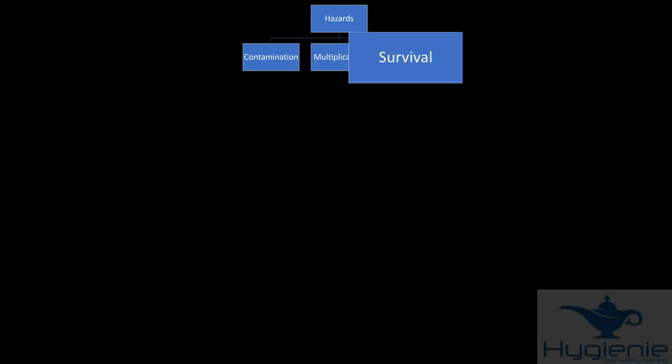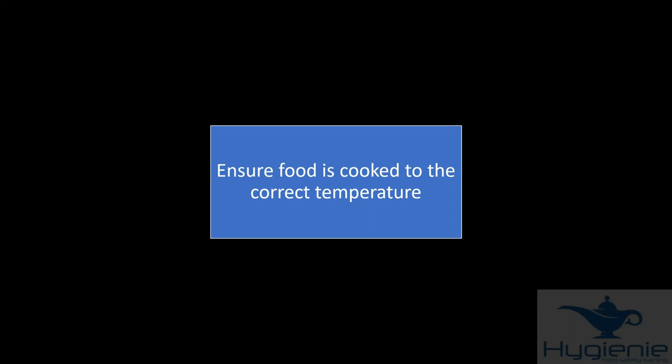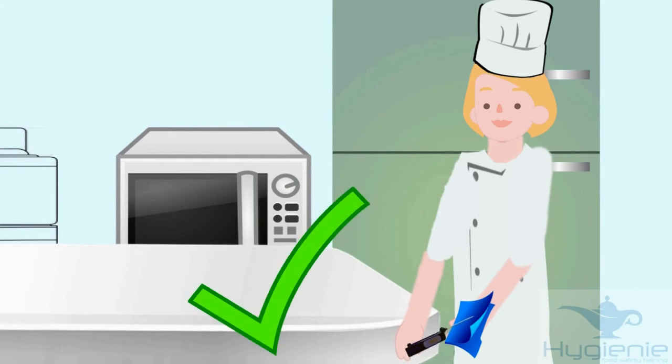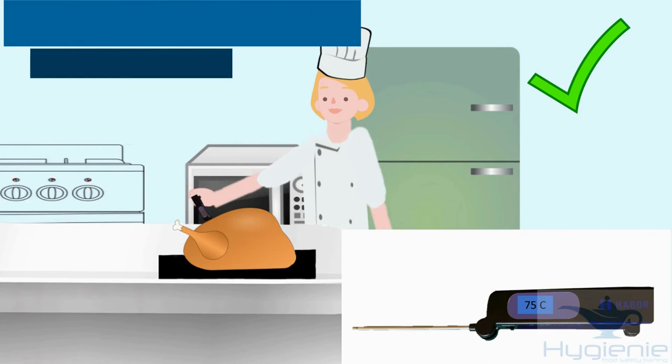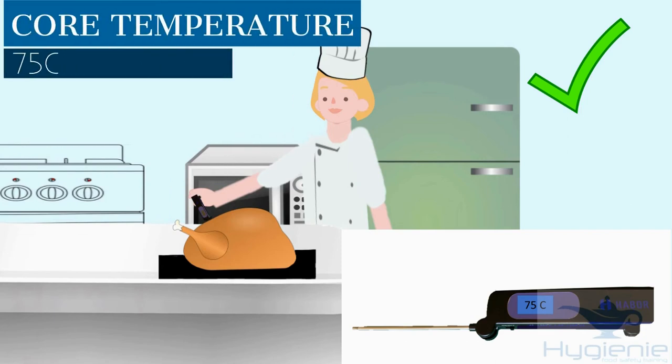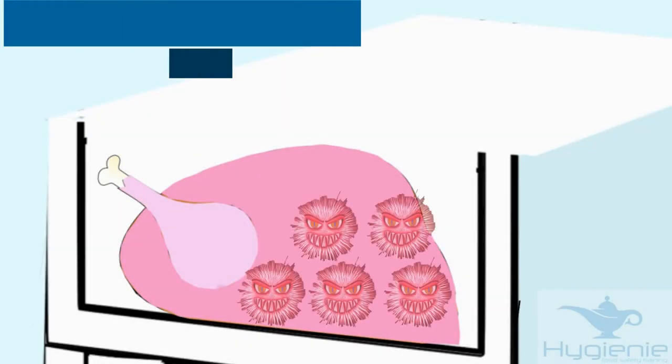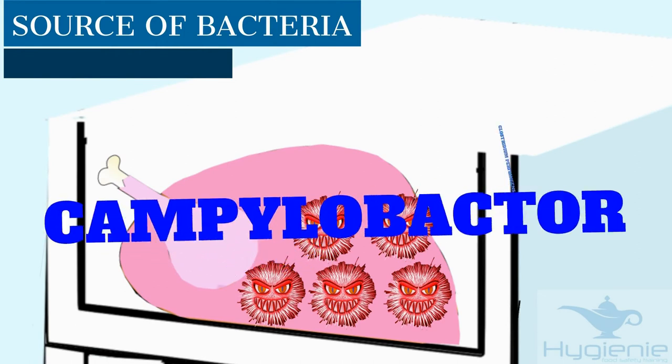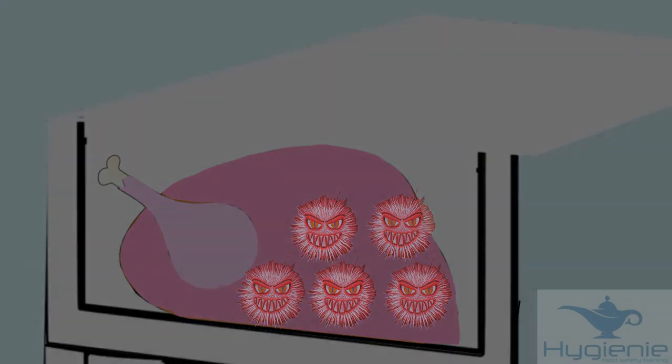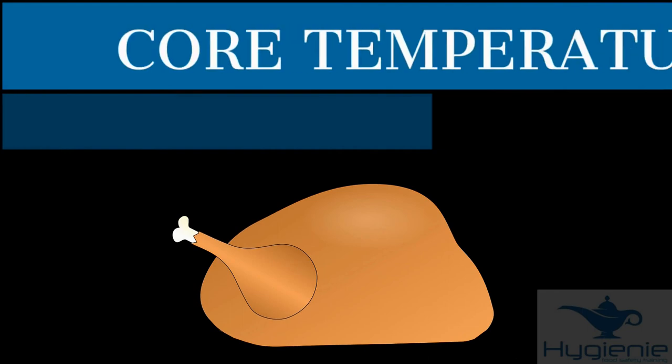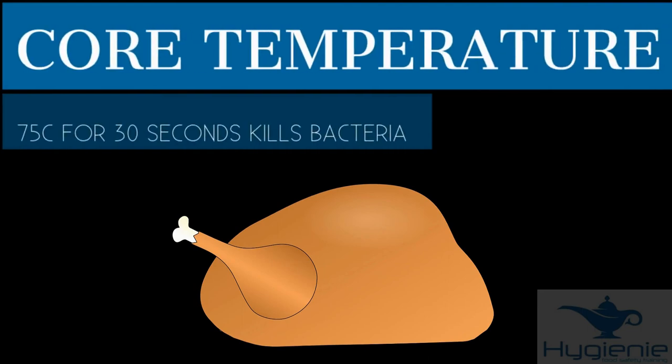Let's focus now on survival. Firstly to ensure bacteria can't survive we need to cook it to the correct temperature. Our chef sanitised the probe before checking the temperature of the turkey. She also inserted the probe deep into the meat to obtain the core temperature which was 75 degrees. Remember the turkey was potentially a source of different types of bacteria. Cooking to 75 degrees for 30 seconds kills bacteria.